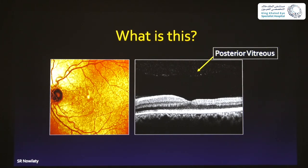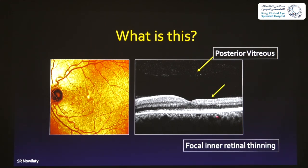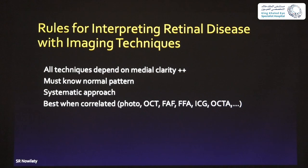The posterior vitreous and the premacular bursa: the premacular bursa is a pocket of clear fluid right in front of the macula before the vitreous detaches completely. Here the vitreous goes up on both sides and you have this bag of fluid — once this fluid goes through the posterior hyaloid, it will lift the vitreous up. Thinning on one side compared to the other is visible — the thicker side with a thicker nerve fiber layer is nasal. If the retina appears thin on the other side, it's probably due to a vascular insult.